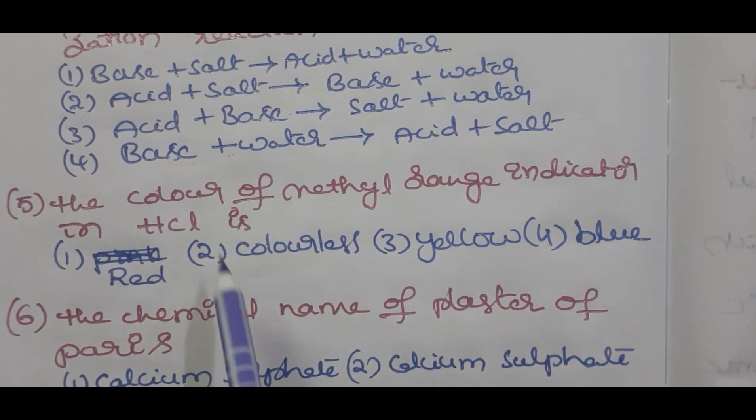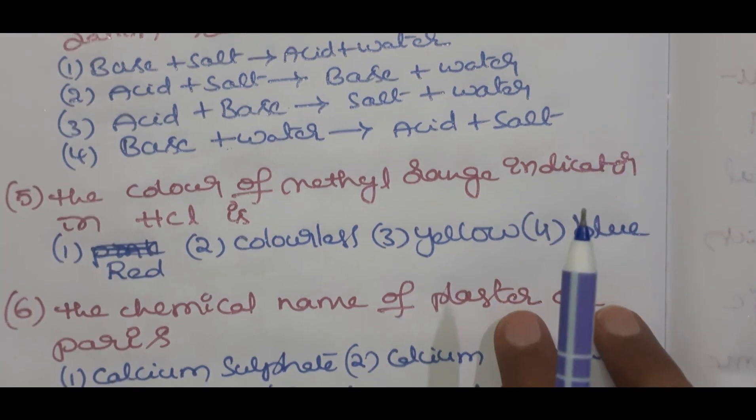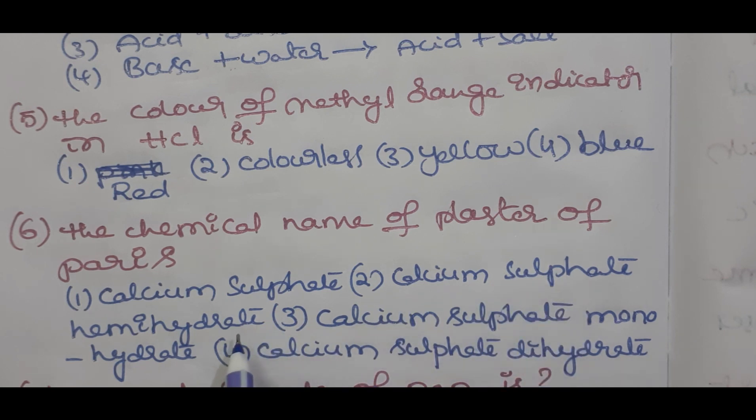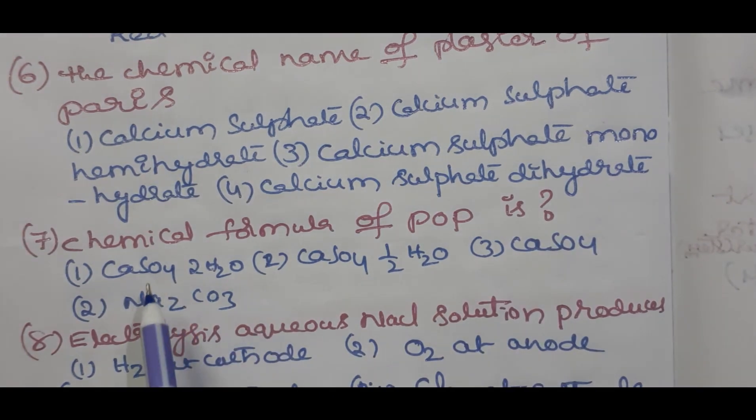Fifth one students: the color of methyl orange indicator in HCl solution is red, colorless, yellow, blue. Find the solutions and send them in comments. Sixth one students: the chemical name of plaster of paris is calcium sulfate, calcium sulfate hemihydrate, calcium sulfate monohydrate, calcium sulfate dihydrate.